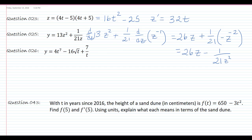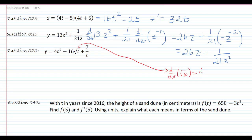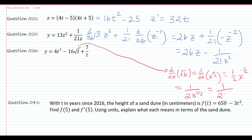This next one — I tell all of my students that the square root, you should really just write this on your formula sheet because there are so many steps involved. So let's show why: the derivative of the square root of x is 1 over 2 square root of x. I can write that as x to the 1 half power, bring the 1 half down, subtract 1, which gives 1 half minus 2 over 2, which is negative 1 half. Then bring the 1 half to the bottom, and I get 1 over 2 square root of x.